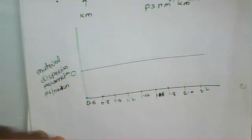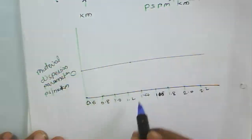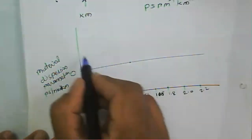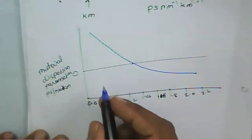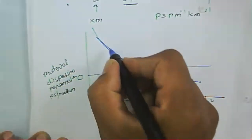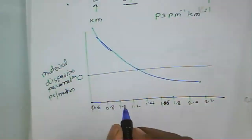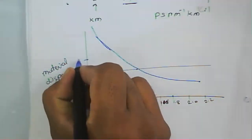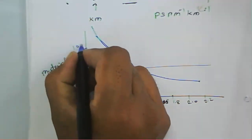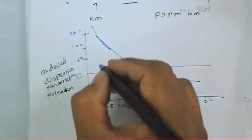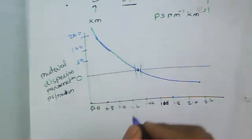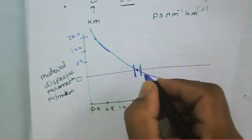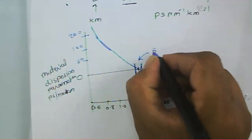At around 1.2 micrometers (1300 nm), the dispersion reduces significantly. The graph shows values around 50, 100, and 200, and at a certain point the dispersion reaches zero. In some regions there is a small dispersion.